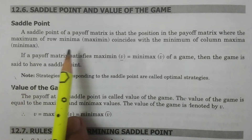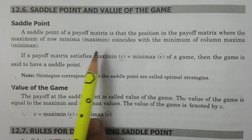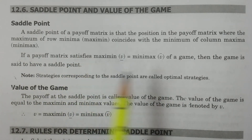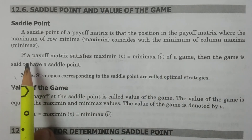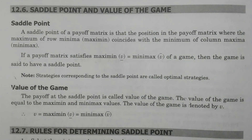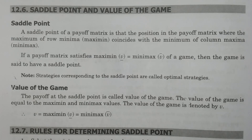The Saddle Point is the position where the maximum of row minima equals the minimum of column maxima — that is, minimax. The minimum of column maxima is the highest value, and at that position the two values coincide and are equal.